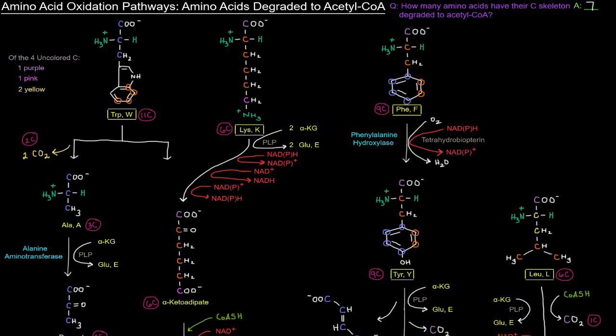For instance, like with tryptophan here, we're going to cut it. As we saw in the previous video, tryptophan gets cut sort of right here. And that top portion ends up in alanine. Those three blue carbons end up there. And that alanine can give rise to pyruvate, as we saw previously.